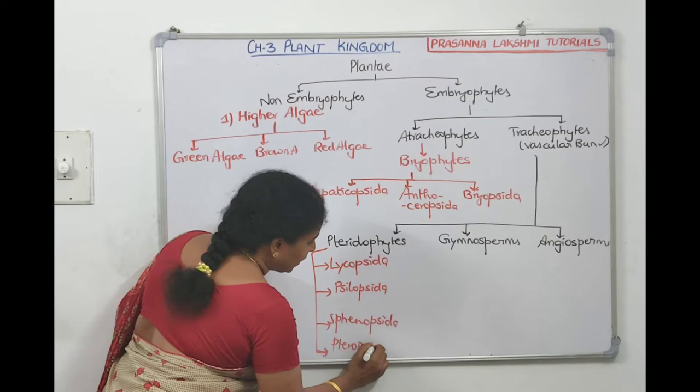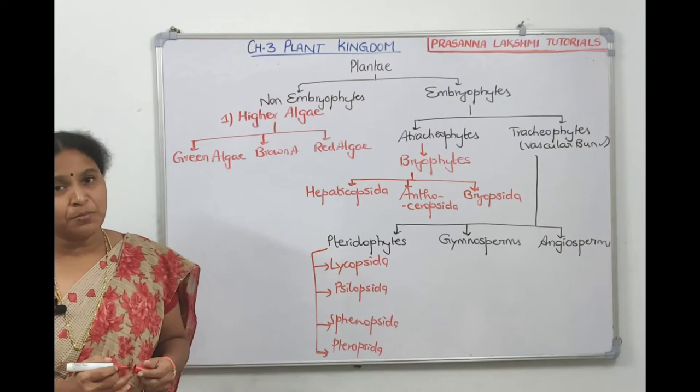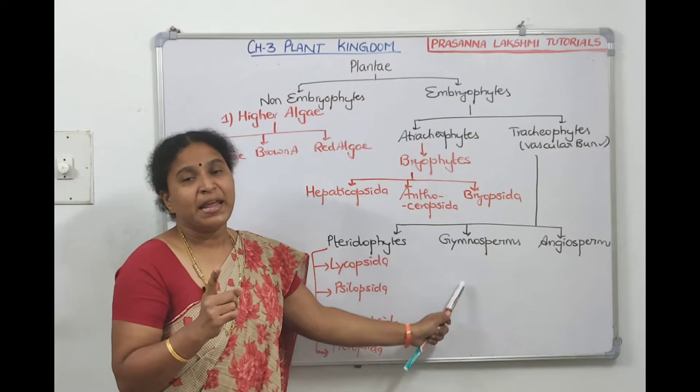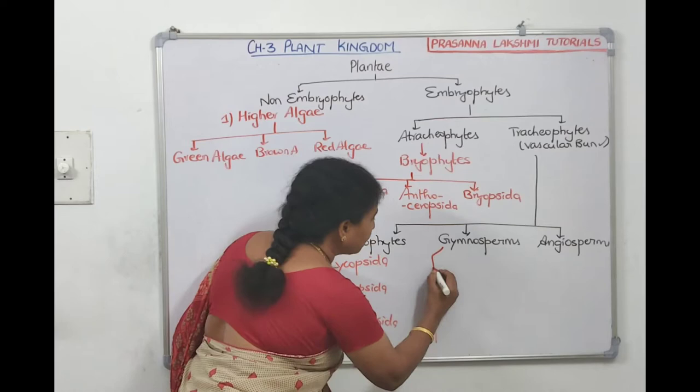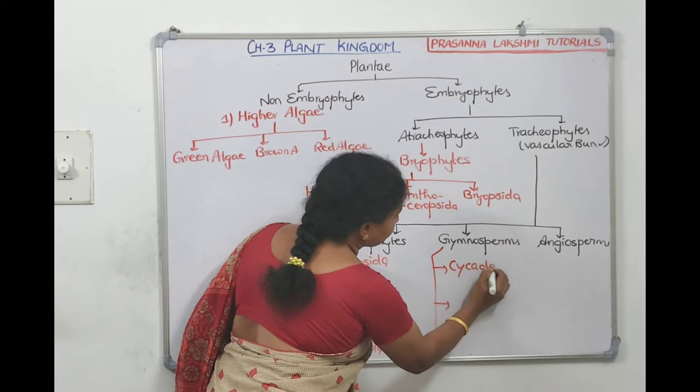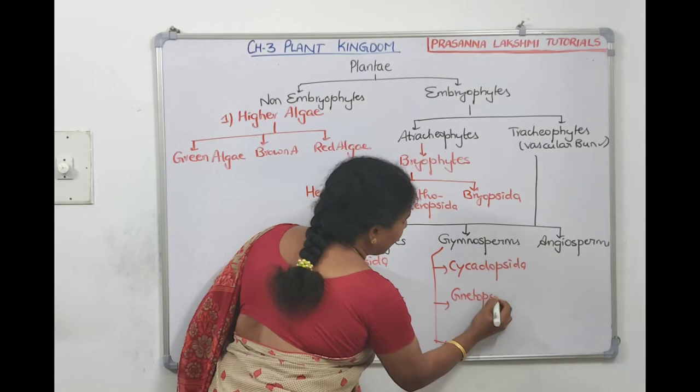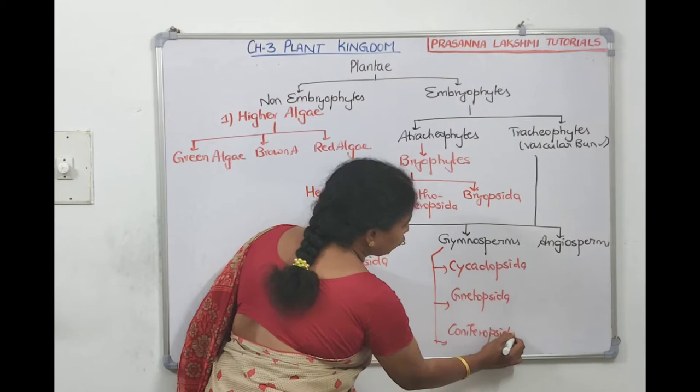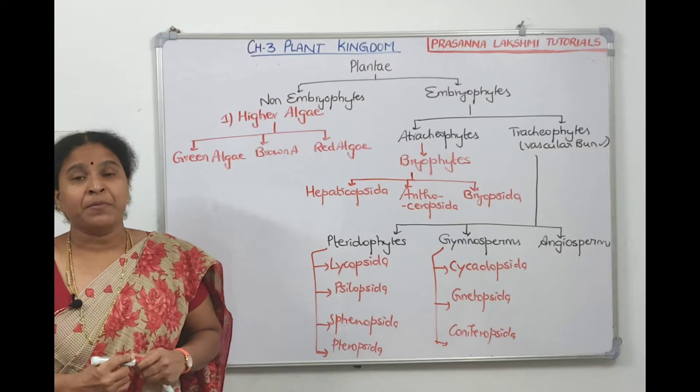Gymnosperms means 'gymna' = naked, 'sperma' = seed — naked-seeded plants. Gymnosperms are divided into three classes: Cycadopsida, Gnetopsida, and Coniferopsida. Angiosperms are divided into two classes: Monocotyledons (one cotyledon in seed) and Dicotyledons (two cotyledons in seed).